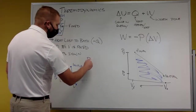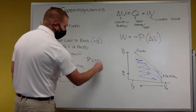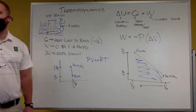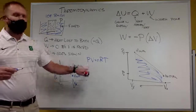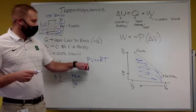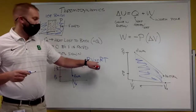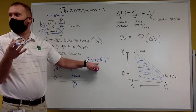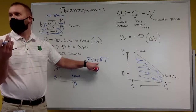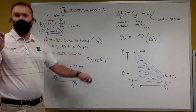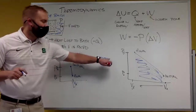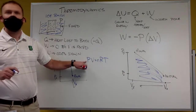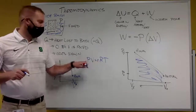Due to PV equals NRT: volume stays constant, N is the number of moles — constant for my system — and R is a constant value. So as temperature drops, what happens to my pressure? It drops as well.